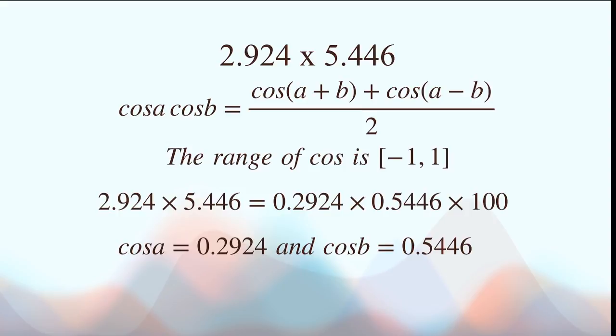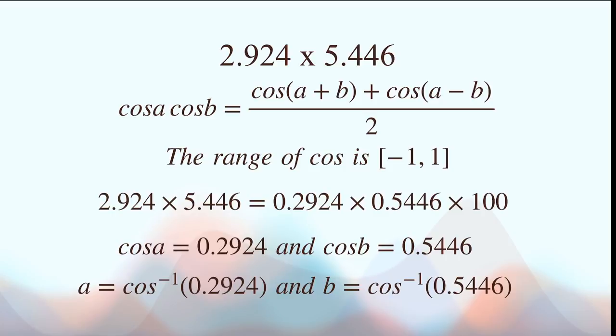So in the simplest form, we have that A is equal to arc cos 0.2924, and B is equal to the arc cos 0.5046.